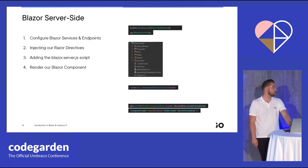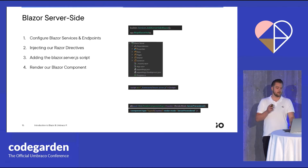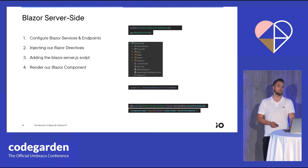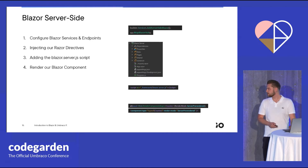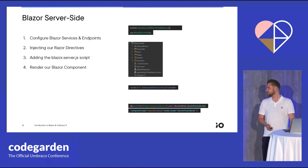There are four steps we have to take to make this happen. First off, we have to configure a couple of services in our application — specifically services and some endpoints. After that, we have to inject our Razor directives using the _imports.razor file, which allows our Blazor application to know which namespaces it should access. After that, we need to add the blazor.server.js script somewhere on a page that requires a connection to our Blazor application. And finally, we're able to render our Blazor component using an await RenderComponentAsync, or as of recently, a tag helper for that, allowing us to specify the type of component we wish to render.